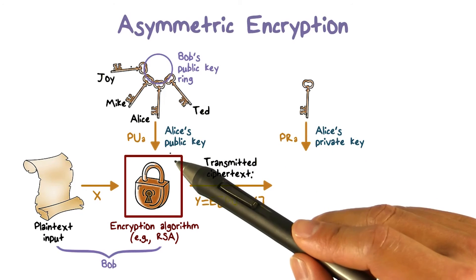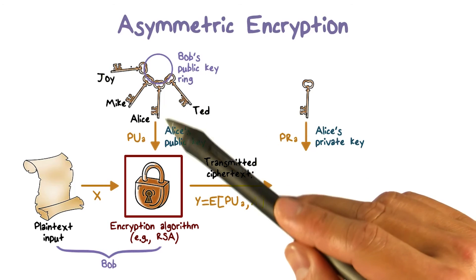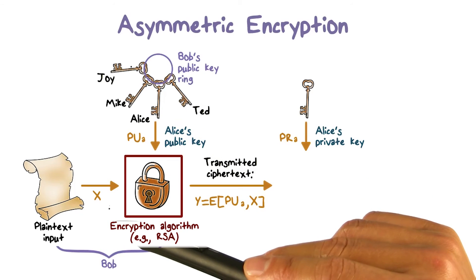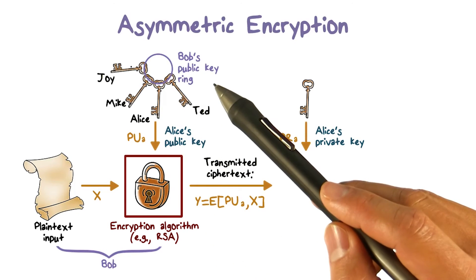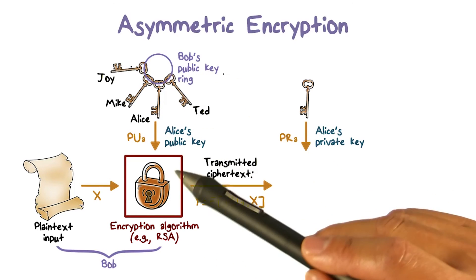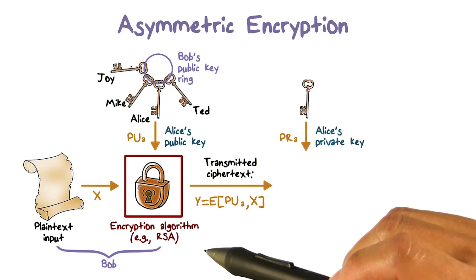Bob will use Alice's public key, which is in his collection, to encrypt a plaintext using an asymmetric encryption algorithm such as RSA.